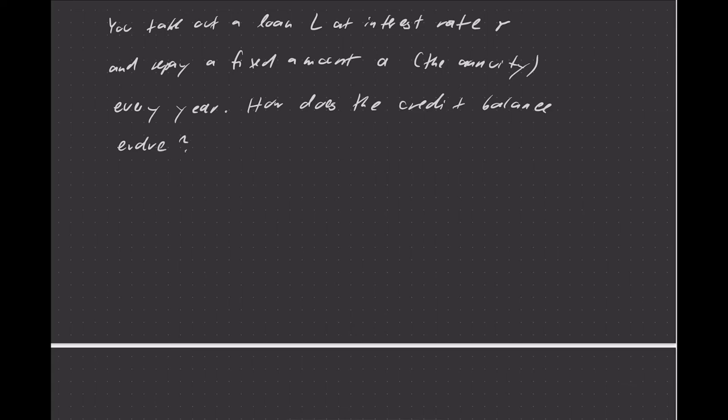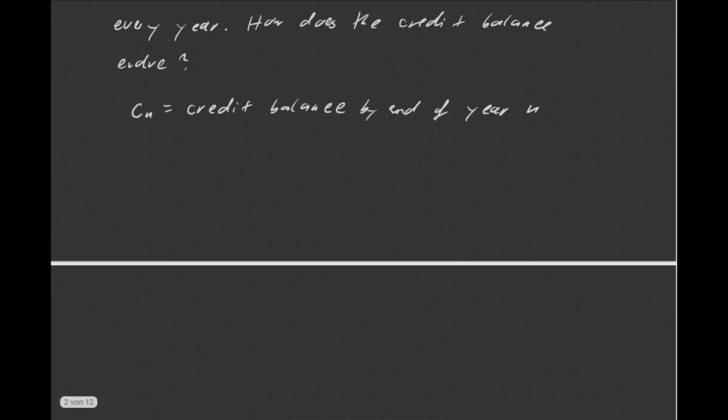Of course, let's say we have a credit balance C_N, and that is the credit balance by the end of year N. Then of course at the very beginning before the first year even starts we have C_0, that is the initial value, that's the loan you're taking out.